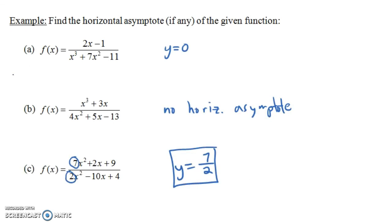So once again we have three cases with horizontal asymptotes. If the degree in the denominator is bigger than the degree in the numerator, then y equals 0 — the x-axis — is a horizontal asymptote. If the degree in the numerator is bigger than the degree in the denominator, then you don't have any horizontal asymptote — you might have an oblique asymptote, but no horizontal asymptote. And if they have the same degree, then y equals the leading coefficient of the top divided by the leading coefficient of the bottom — in this case y equals 7/2 — is the horizontal asymptote.